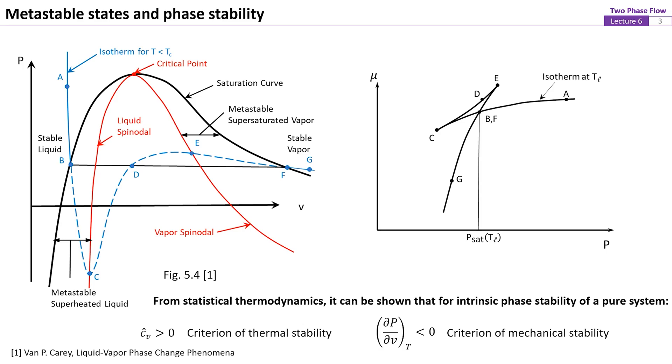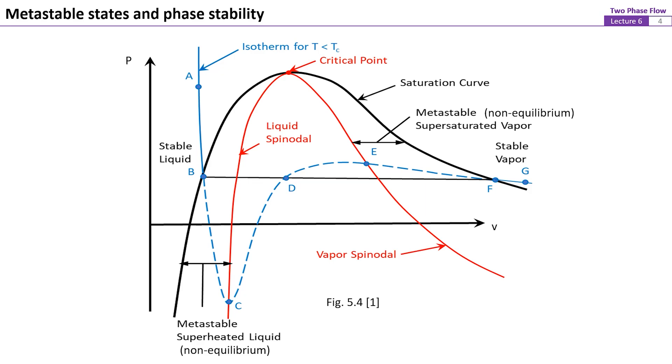Since the first one is virtually true for all substances, the second criterion, also called the criterion of mechanical stability, is a sufficient and necessary condition for the stability of phase. According to this criterion, in addition to the subcooled liquid and superheated vapor regions, it is expected that a single phase fluid would also possibly exist in partial regions inside the vapor dome.